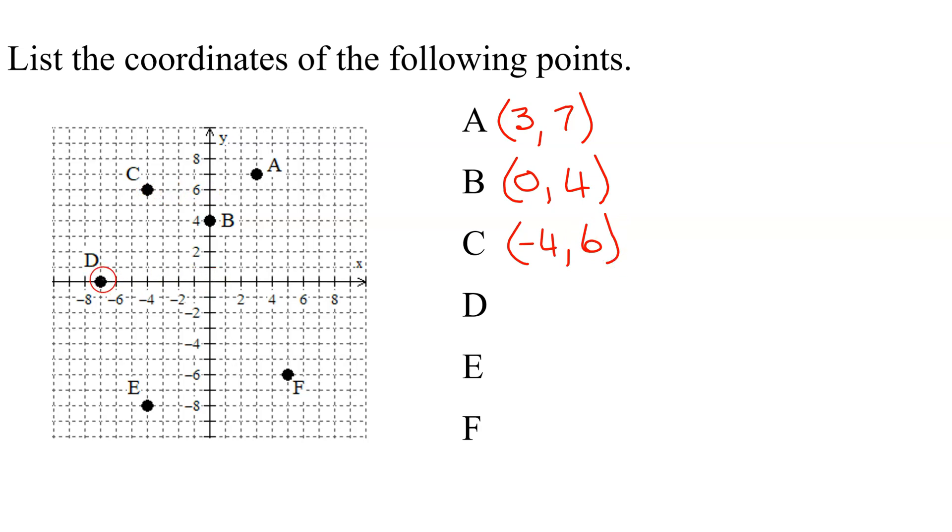D, what is the x value of this point? It is halfway between negative 6 and negative 8, so it's negative 7. And what's the y value? It is 0, because you go nowhere in the y direction.